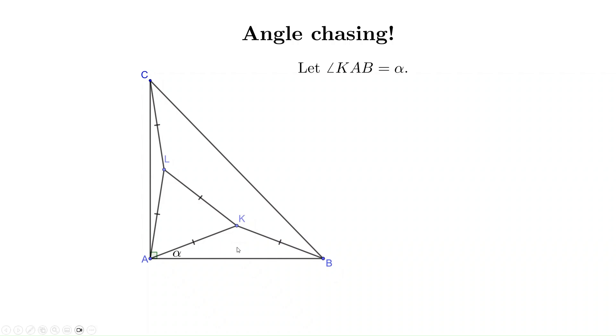First, assume angle KAB has measure alpha. The objective is to express the measures of other angles in terms of this alpha. Angle KBA is another base angle of the isosceles triangle KAB, so its measure is alpha. Then, the third angle on the top has measure 180 - 2α. Now, triangle AKL is an equilateral triangle, so it has three 60-degree angles.